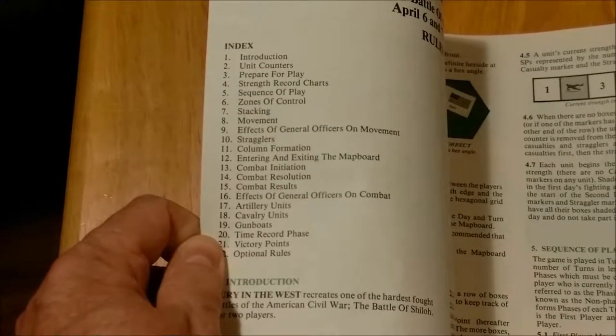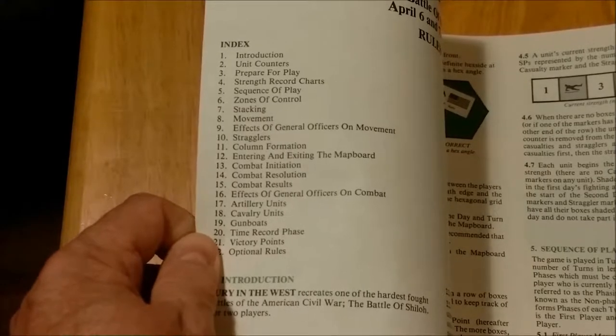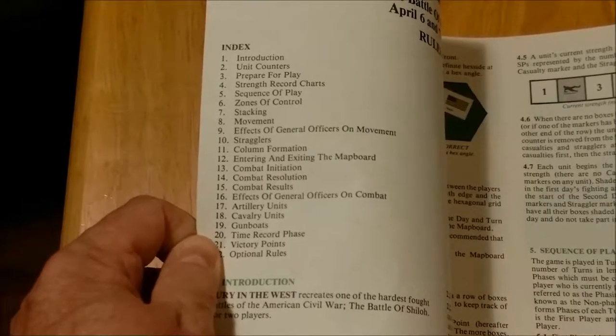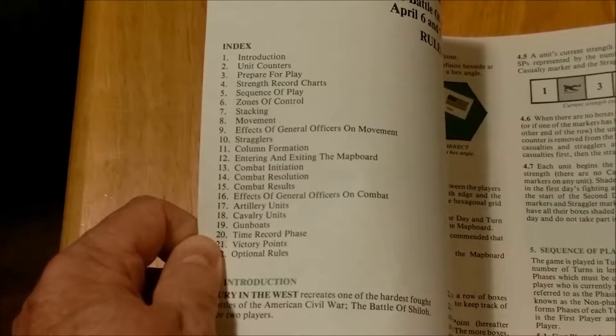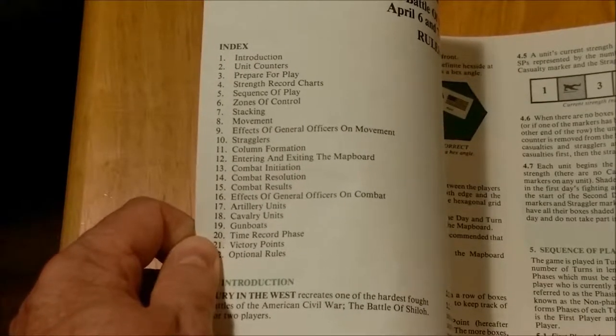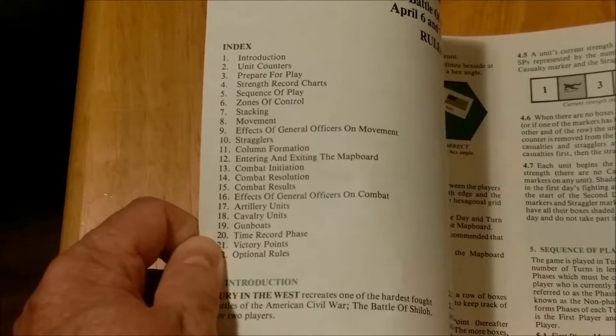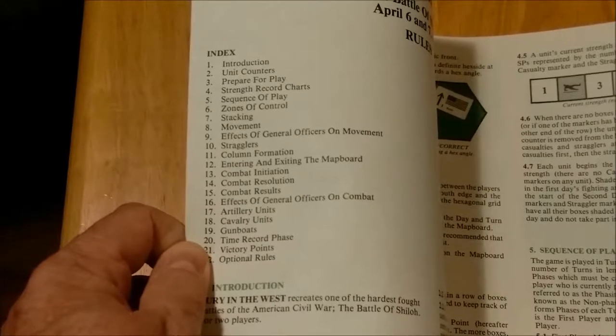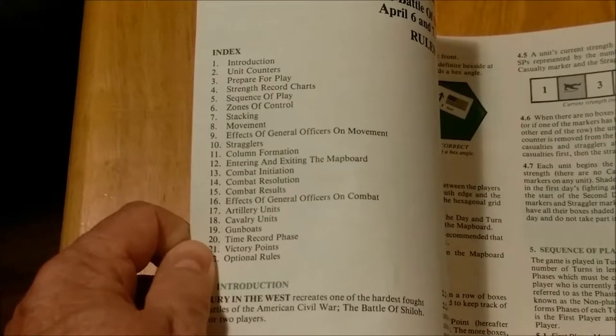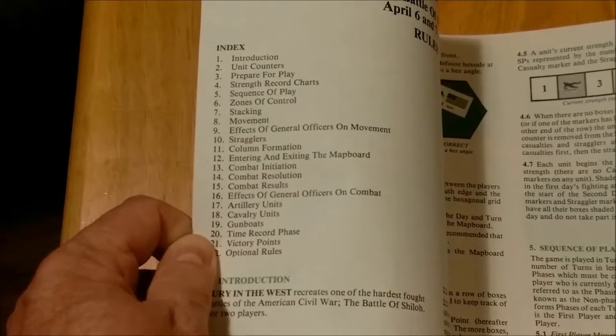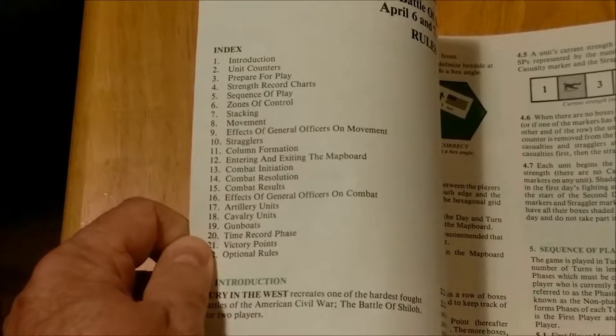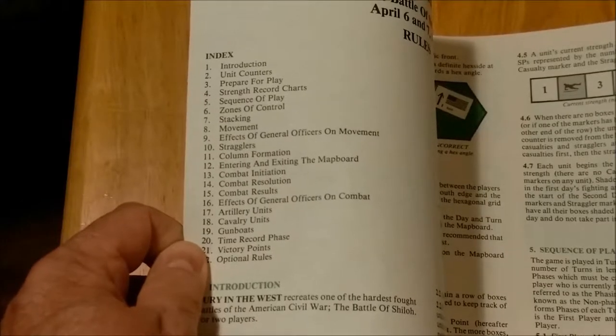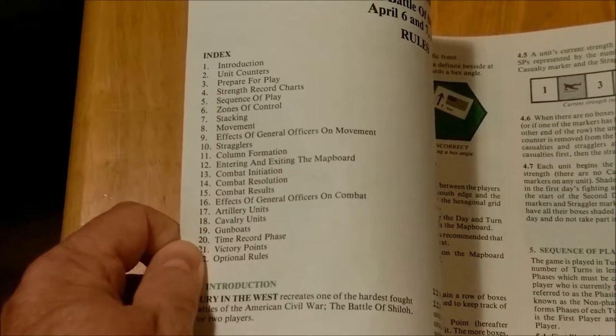And then we have the column formation, which basically lets you move faster and does not generate stragglers. Combat initiation, combat resolution, and combat results. And the effect of generals on combat. Basically they provide a plus one to either attack or defense. Then we have special rules for artillery units. They cannot voluntarily enter an enemy zone of control.